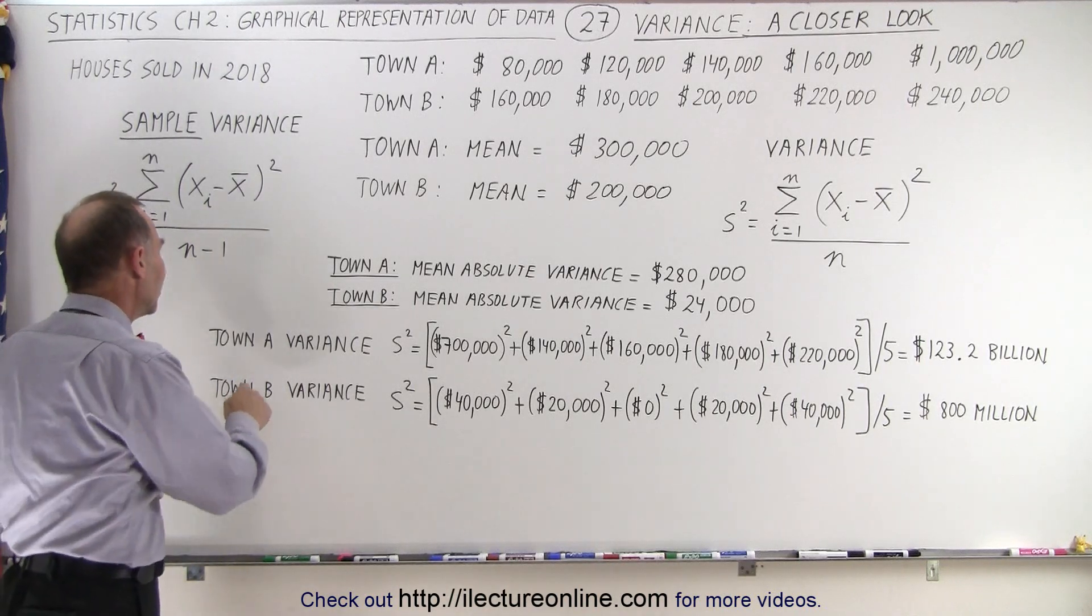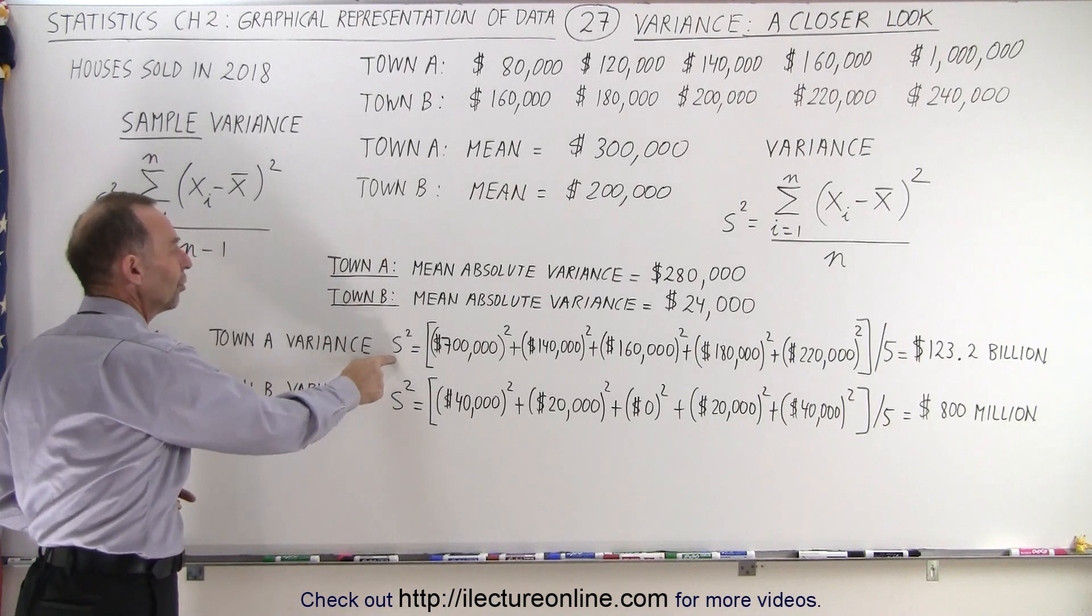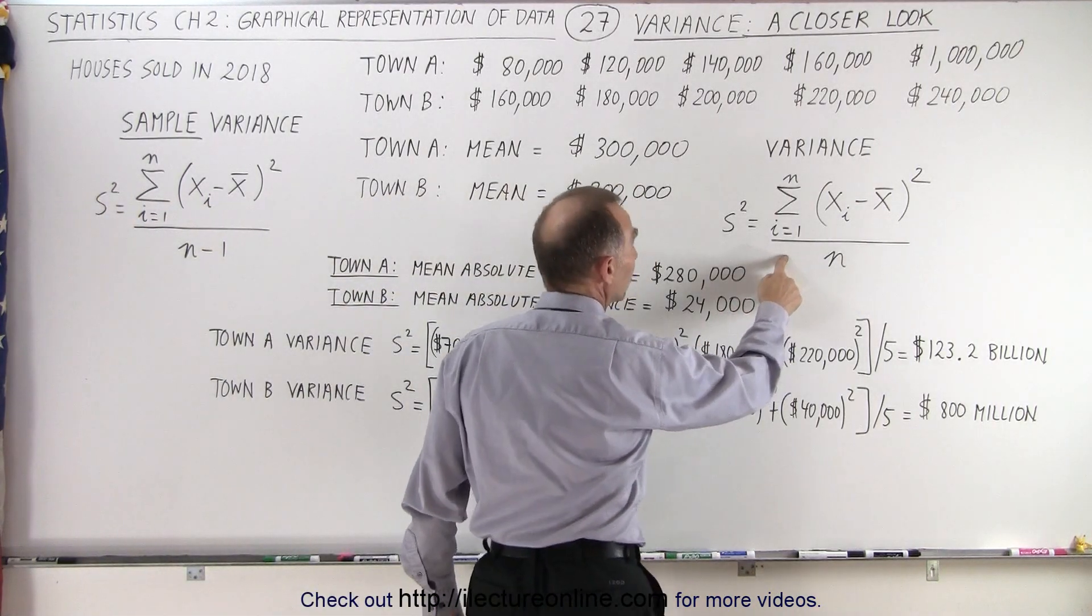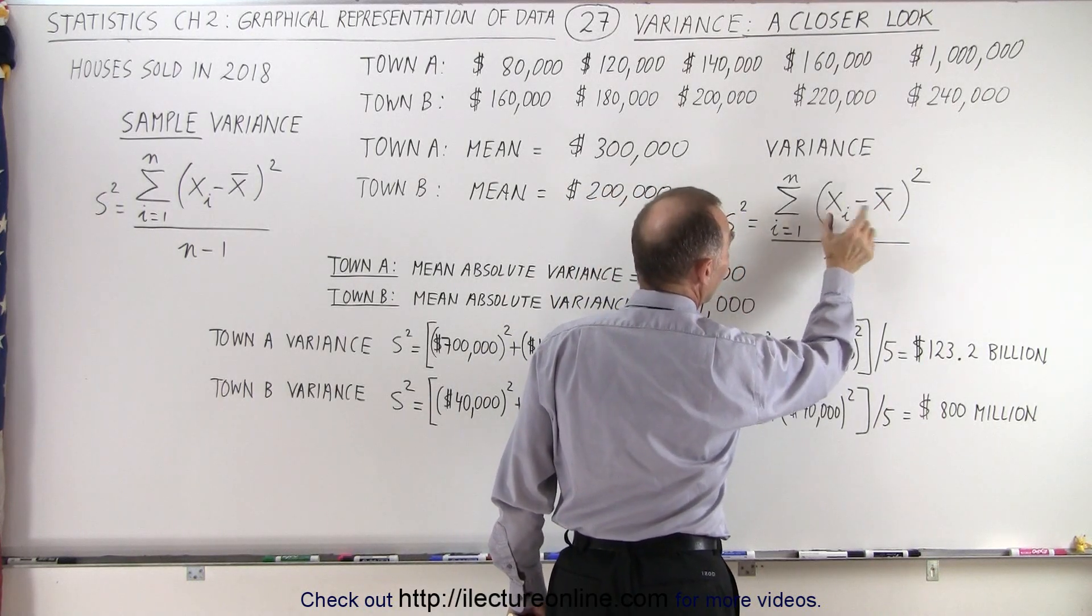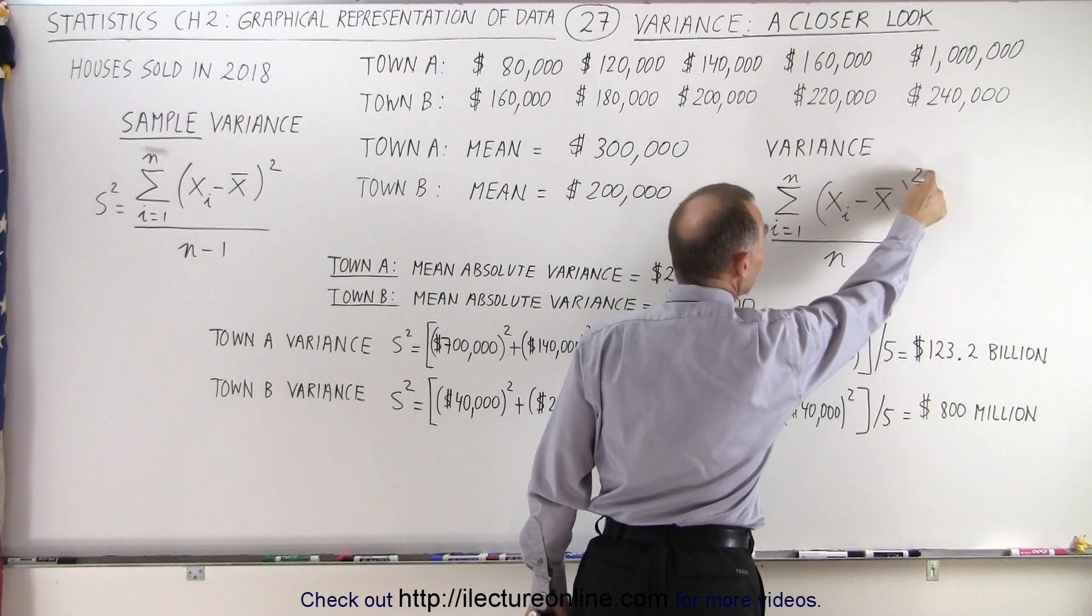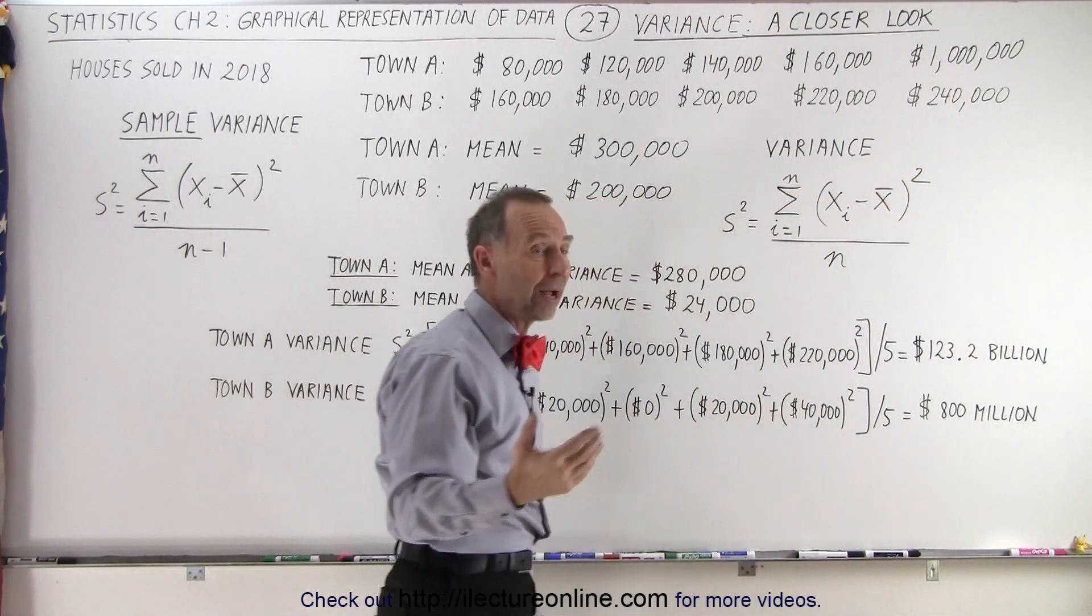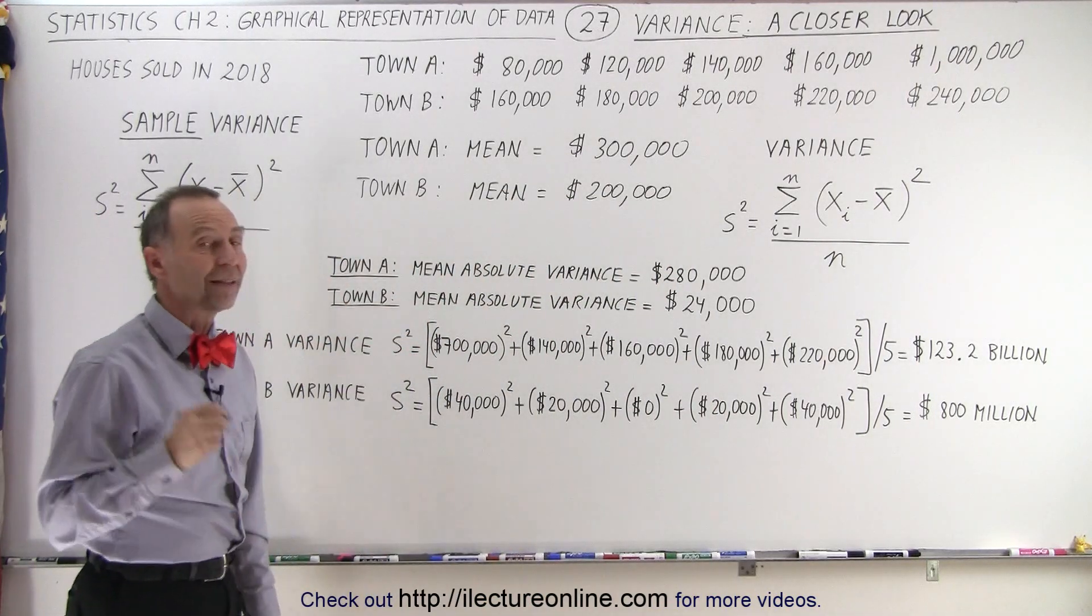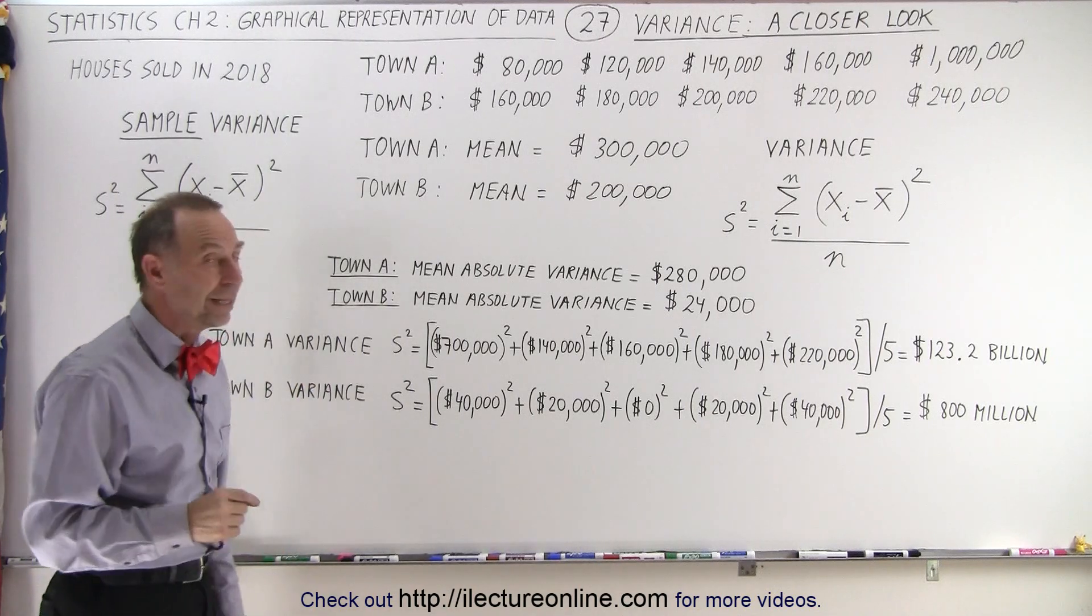But now when we calculate for each of the two towns, A and B, the variance which is represented by s squared, the variance is the equation here. It's the difference between the average price and the price of each house. You take that difference and you square that number, you sum up all those and then you divide by the total number of houses sold, then you get what we call the variance. Now let's see what happens when we calculate the variance for town A and the variance for town B.